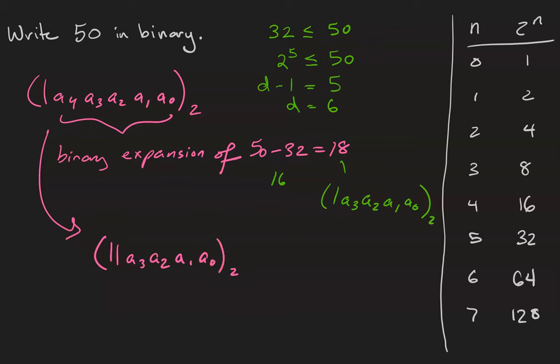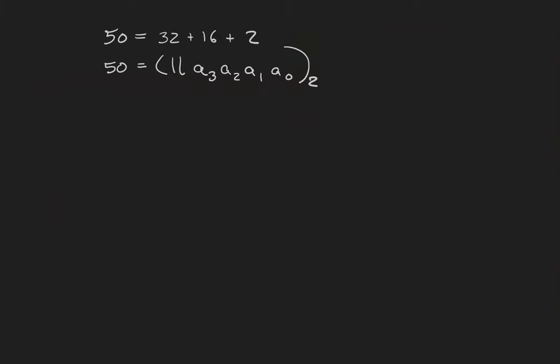There should be a sub 2 here as well. Where the remaining digits are the binary expansion of whatever is left over. 18 minus 16 is 2. So what we've seen so far is that 50 can be decomposed into 32 plus 16 plus 2. In binary, that would be 1, 1, where the first two ones represent the 32 and the 16, followed by four unknown digits.